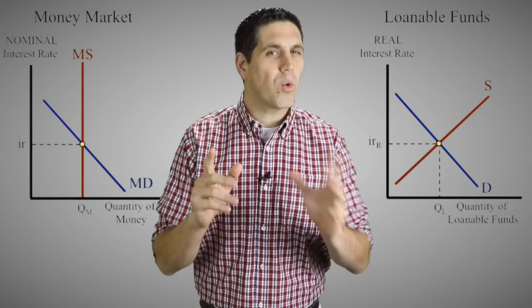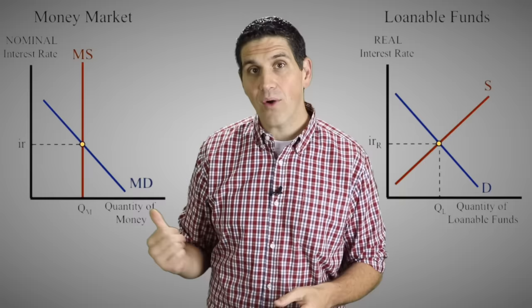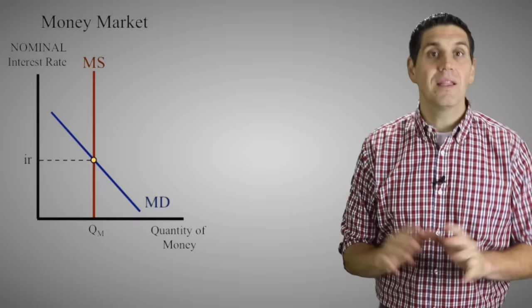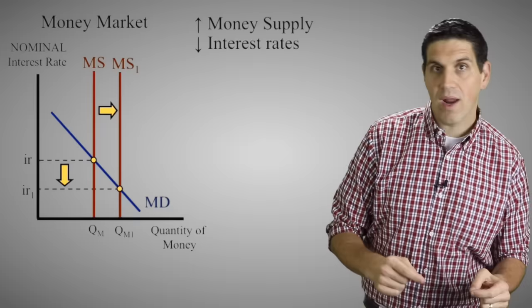Both graphs are labeled interest rates, but why are there two graphs in the first place? The quick answer is that one graph has to do with short-run decision making and the other one has to do with long-run decision making. The money market graph shows supply and demand for money. An increase in the money supply will lower interest rates and promote more investment and consumer spending — that's expansionary monetary policy.